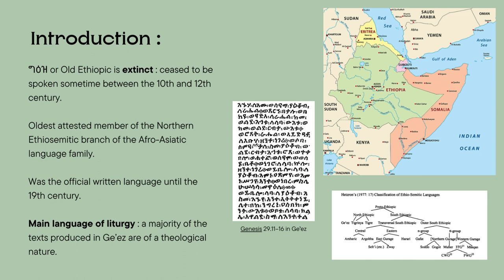It's used in prayer and in scheduled public celebrations. Therefore, the majority of the texts produced in Ge'ez are of a theological nature. Amharic and Tigrinya are now the main languages spoken by the Ethiopians and the Eritreans. They both share similar features with Ge'ez and use the same writing system. The traditional classification of Ethiosemitic languages divides them into North and South Ethiosemitic. North Ethiosemitic languages consist of Tigrinya and Ge'ez, and South Ethiosemitic languages consist of Amharic and all other languages.